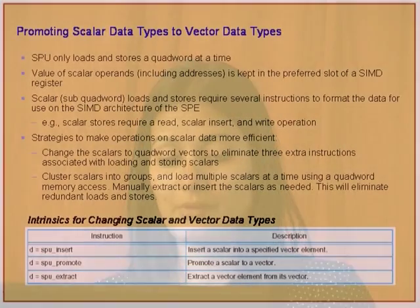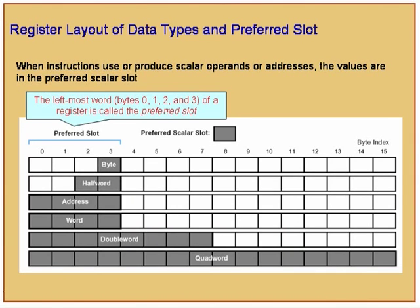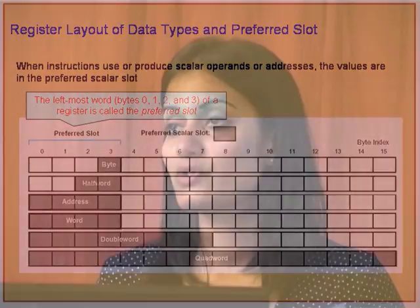An example of SPU instructions: spu_insert will insert a scalar into vector D; spu_promote will promote a scalar to a vector; and spu_extract with an index extracts an element. For example, if dealing with four unsigned ints in one vector, elements 0 through 3 are integer element 0, elements 4 through 7 are integer element 1, and so on. All loads and stores are one quad word at a time, 16 bytes at a time.